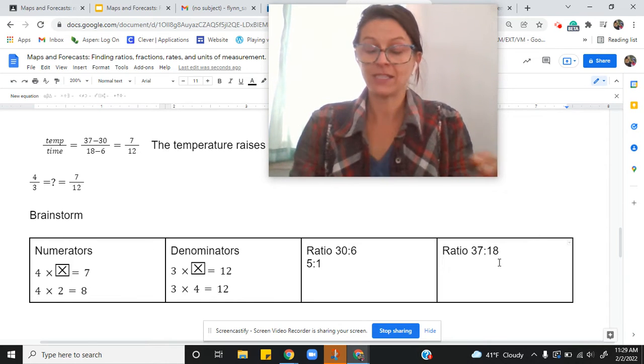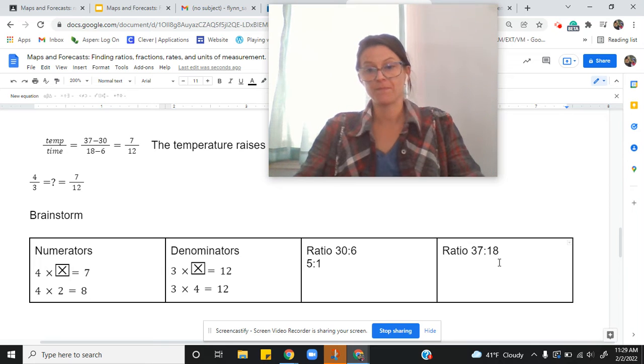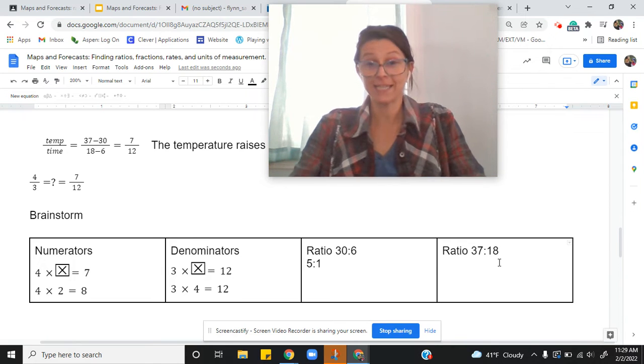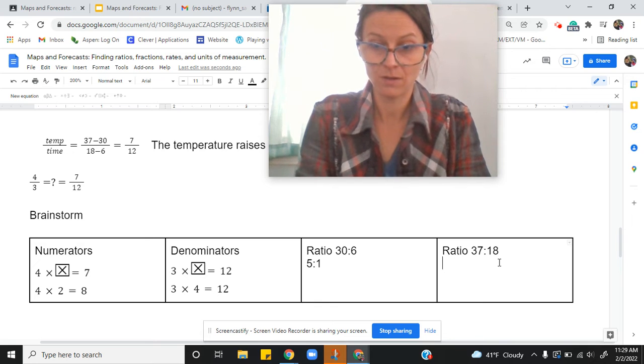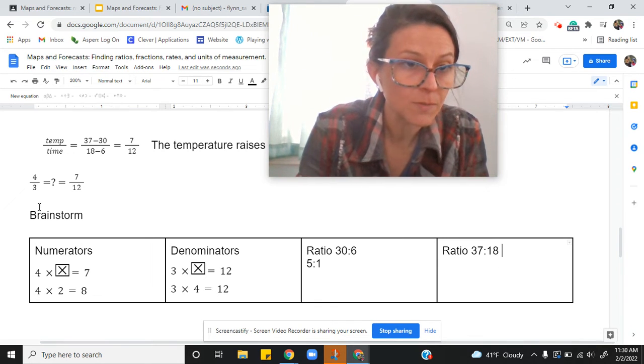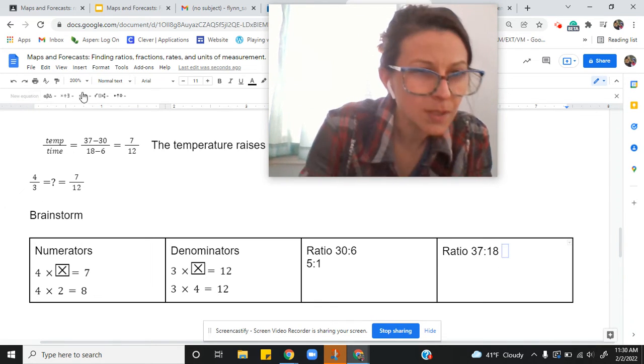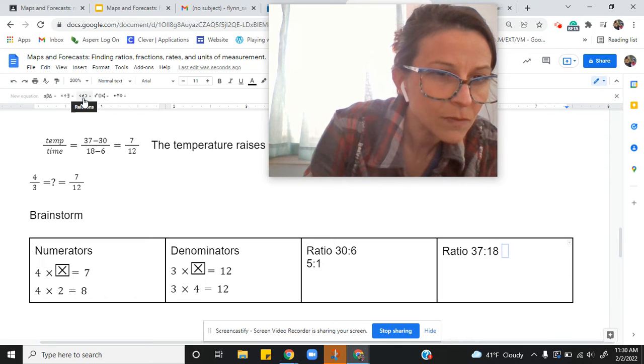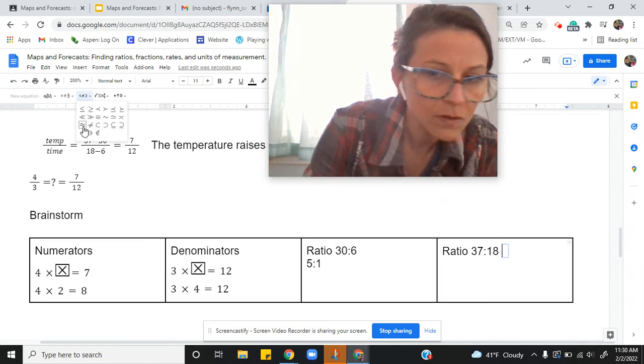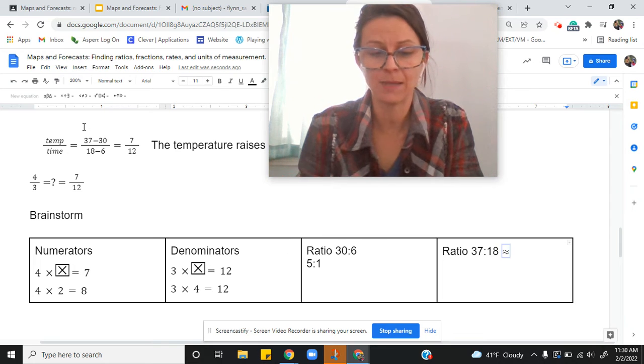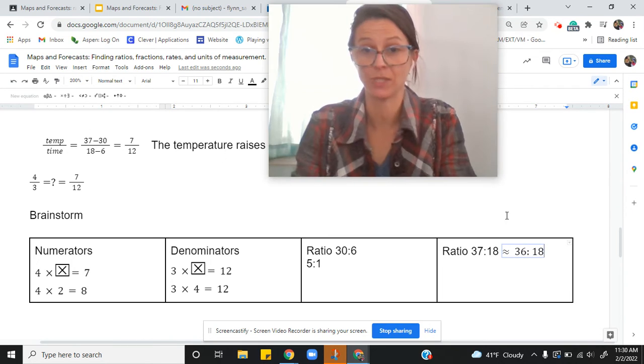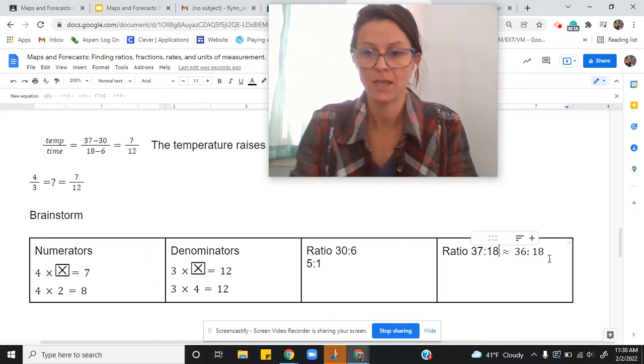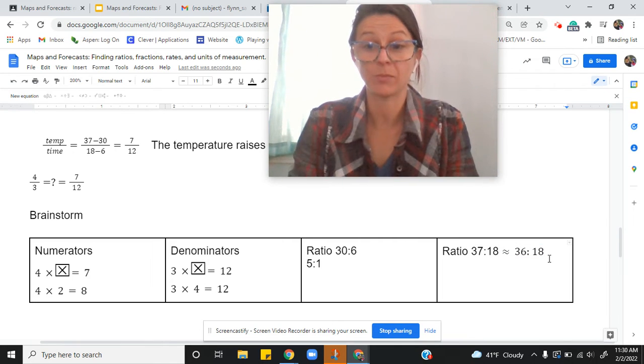37 to 18 we haven't done this one yet, but 36 is close to - what I can do is use my approximately equal to symbol - almost the same as 36 to 18, right? And that's much easier to reduce for me because 36 over 18 are both divisible by 9.